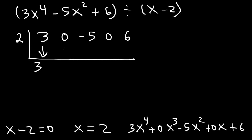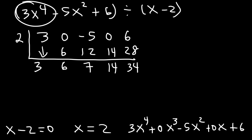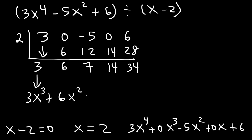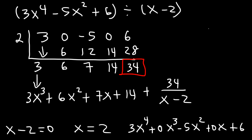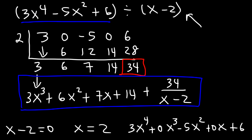Bring down the 3. 2 times 3 is 6. 0 plus 6 is 6. 2 times 6 is 12. Negative 5 plus 12 is 7. 2 times 7 is 14. 0 plus 14 is 14. 2 times 14 is 28. 6 plus 28 is 34. Now, 3x to the fourth divided by x is 3x cubed. The answer is 3x cubed plus 6x squared plus 7x plus 14, with a remainder of 34 divided by x minus 2. So 3x to the fourth minus 5x squared plus 6 divided by x minus 2 equals everything shown.